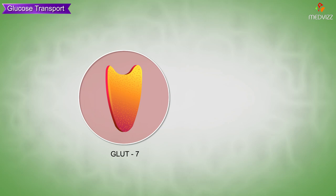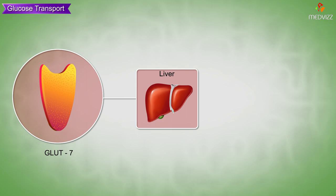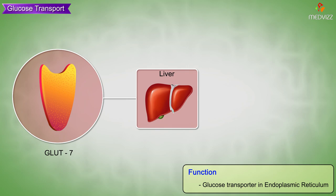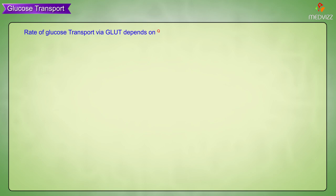GLUT6 is located in white blood cells and the spleen; its function is not known. GLUT7 is located in the liver endoplasmic reticulum; its function is glucose transport in the endoplasmic reticulum. The rate of glucose transport via GLUTs depends on the number of GLUTs, the concentration of glucose, and the affinity of the GLUT for glucose.